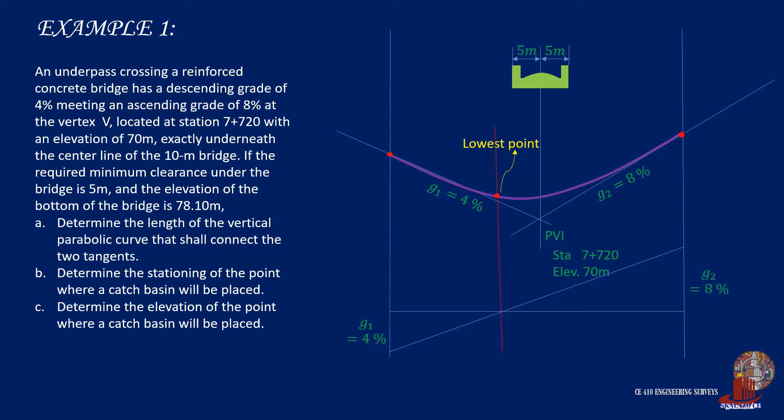The bridge is 10 meters in width, giving either side of the centerline 5 meters length. The bottom of the bridge is at elevation 78.10 meters. The requirement of the minimum clearance between the bridge and the underpass is 5 meters as illustrated. The minimum clearance will be taken from the most critical point of the bridge, which would be the right edge. Identifying these conditions will help us determine the requirements.